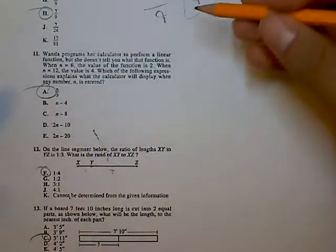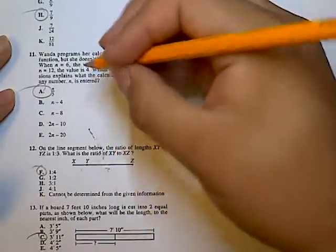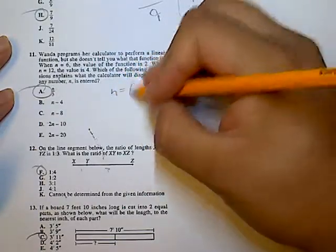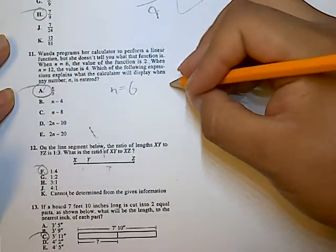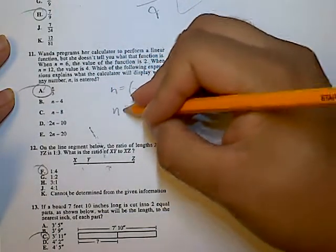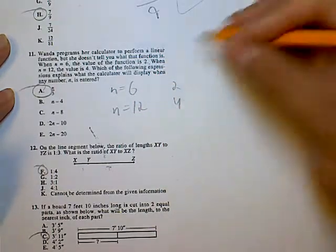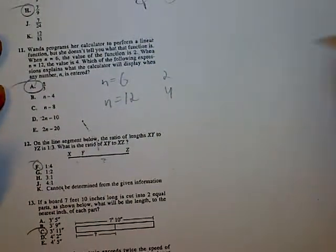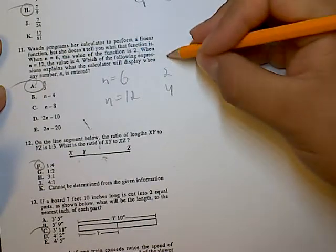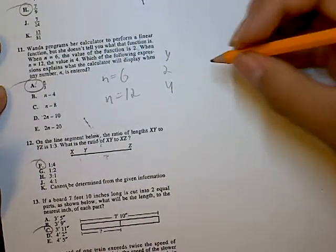For number 11, we have values when n equals 6, the function gives us 2, and when n equals 12, the function gives us 4. So what we're going to do is try to find the slope. We're going to count these as our y values.